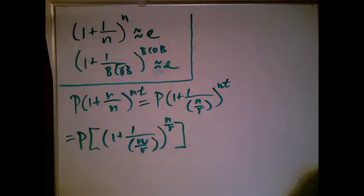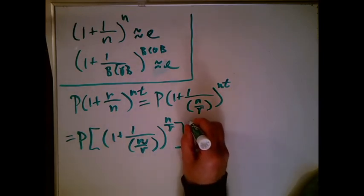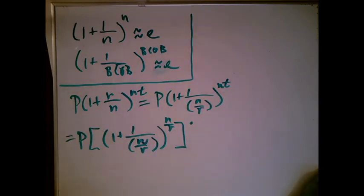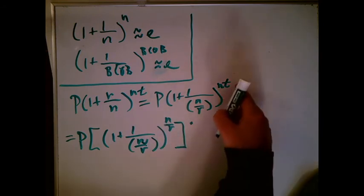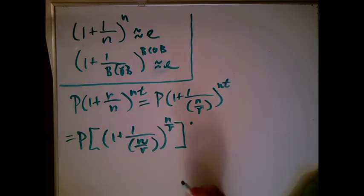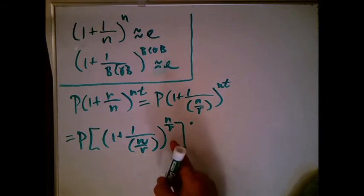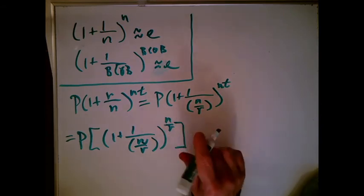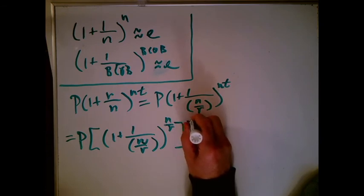So what I want to do is put an exponent right there so that N over R times that exponent is Nt. Well, two things have to happen, right? That first off, this R has to cancel. So there has to be an R up here like that.